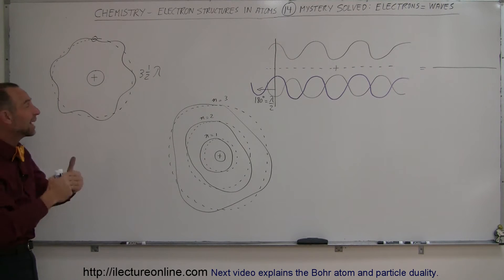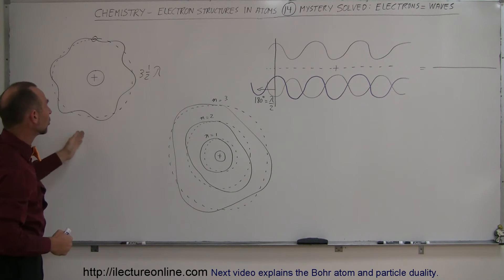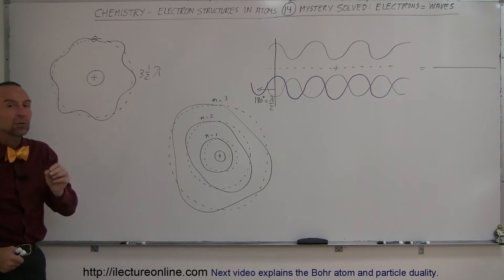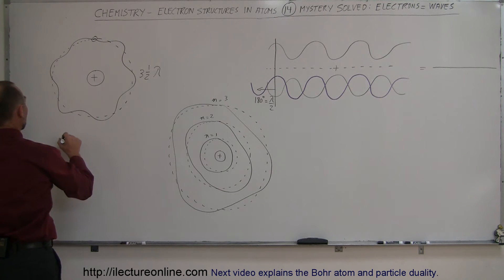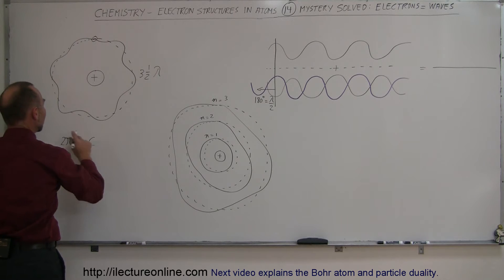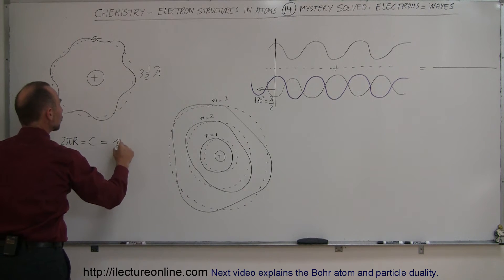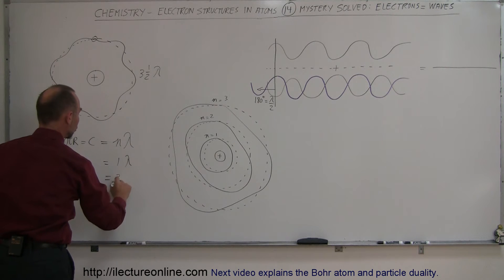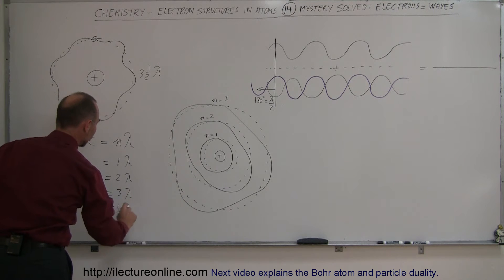In other words, the electron simply cannot exist in an orbit around the nucleus such that the path length of the orbit is not equal to an integer number of wavelengths. Which means the path length — which is two pi times the radius, the circumference of its orbit — must be equal to an integer number of wavelengths: one lambda, two lambda, three lambda, four lambda, and so forth.